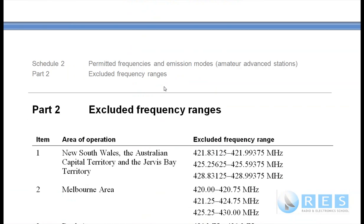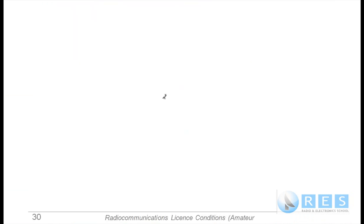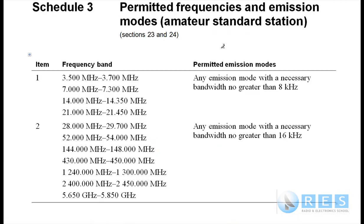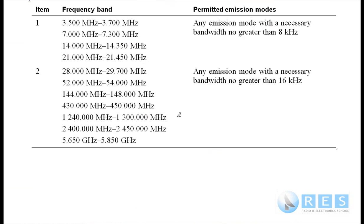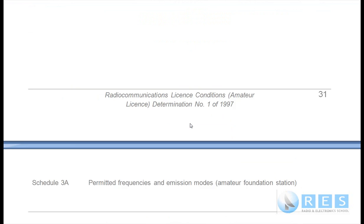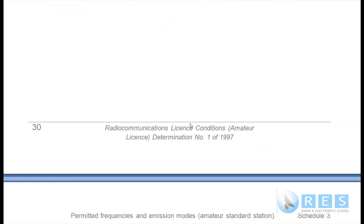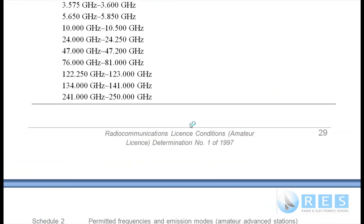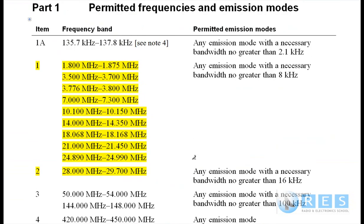Now if you're doing standard, the next schedule down is Schedule 3, and those are the permitted bands for the standard station. All you have to do is read out four of these bands and the assessor will be very happy. And Schedule 3A, just down a bit further, is for foundation. So if you're doing a foundation practical, the assessor will get you to read out four of those bands. Just make sure you have your LCD with you and make sure you have a bookmark in it — on page 29 for the advanced license, and then the next couple of pages over for standard and foundation.